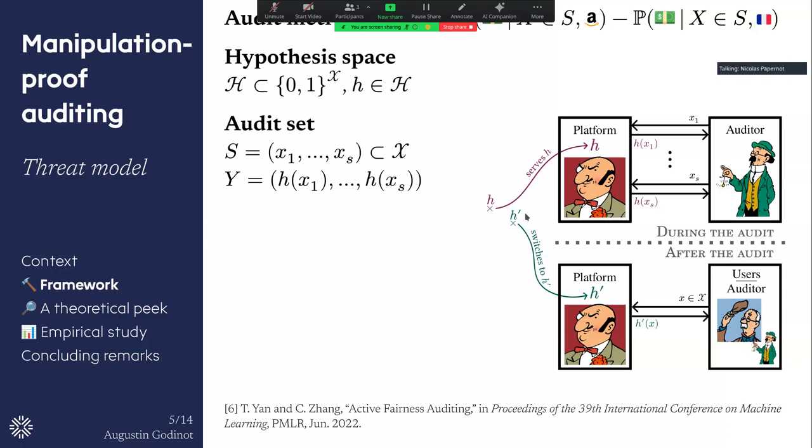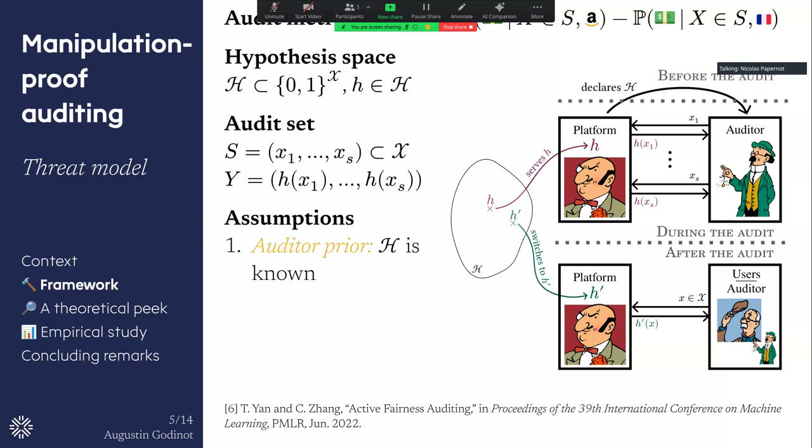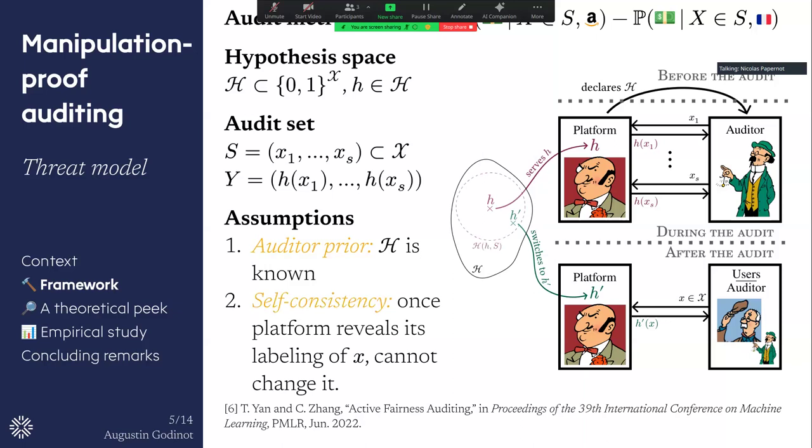So of course, if we don't make any further assumption, we cannot bound anything here. So Yan and Seng introduced two assumptions. The first one is that the platform has to declare the type of model they use to the auditor. And the second one is that if the auditor asks the same questions after the audit, the answers should not have changed.